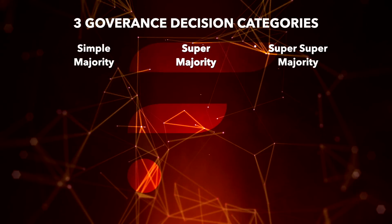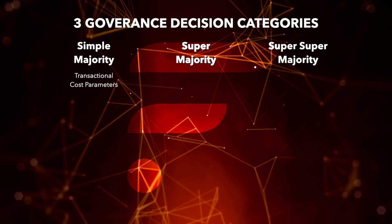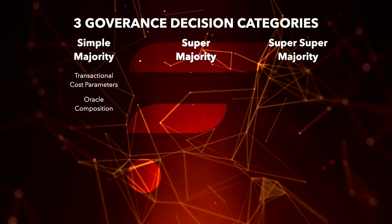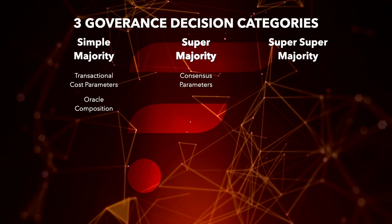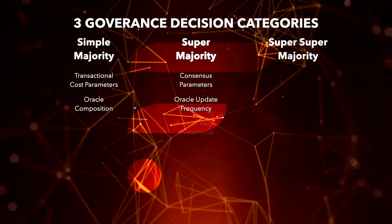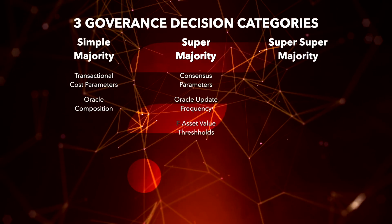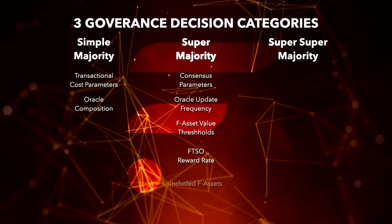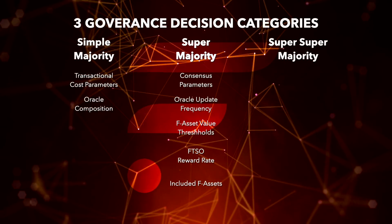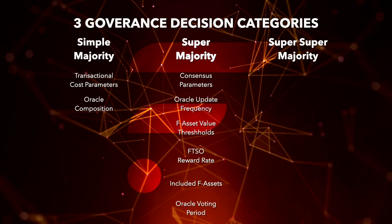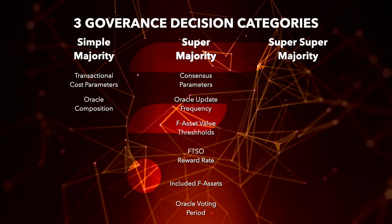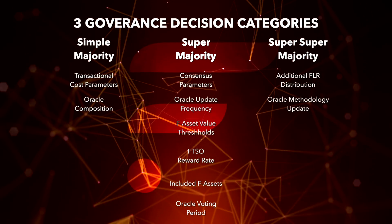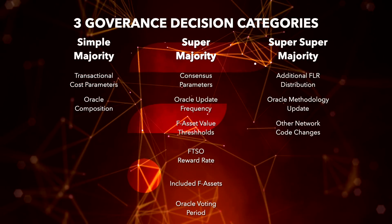Decisions in the simple majority include transactional cost parameters and Oracle composition. Decisions in the super majority include consensus parameters, Oracle update frequency, F-asset value thresholds, Flare Time Series Oracle reward rate, F-assets to be included in the network, and Oracle voting periods. Finally, the decisions for the super super majority include additional Spark distribution, Oracle methodology update, and other network code changes.